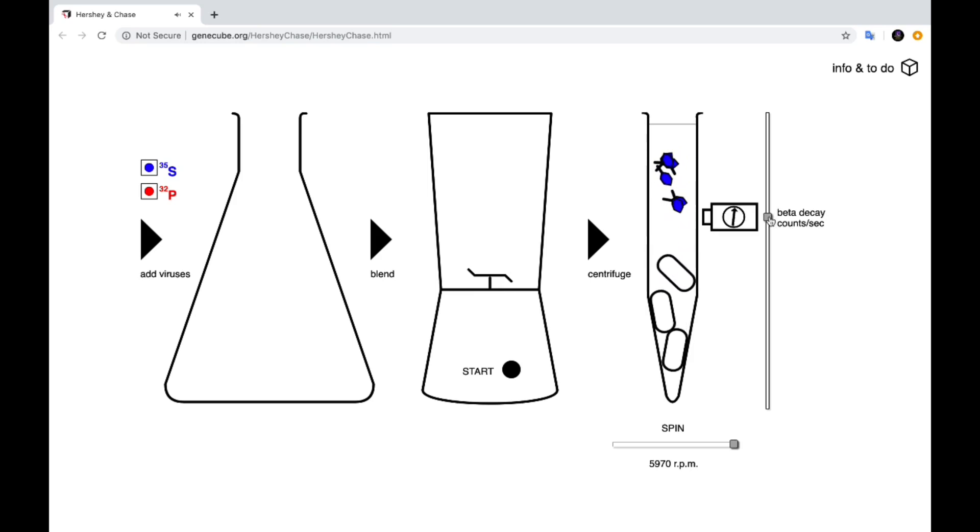Which are found at the top in the liquid otherwise known as the supernatant and then at the bottom you can see the bacteria that were infected by the virus. Now we can use the sensor to detect the presence of radioactivity and you can see that as the dial swings to the right we can detect radioactivity in the supernatant at the top but not in the bacteria at the bottom that were infected by the viruses.